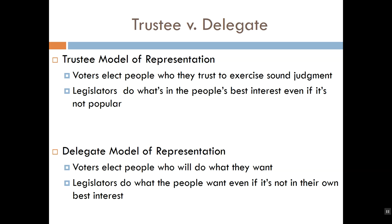What that means is that they are at least sometimes going to act like delegates rather than trustees. In the delegate model of representation, elected officials just give the people what they want. They trust that the people have a better understanding of what's in their own best interest than the politicians we send to Washington, and so they simply comply with those wishes. They don't get to exercise much discretion — they're essentially middlemen. We tell them to jump and they ask how high. Their own opinions, beliefs, or perspectives don't factor into the decision at all; they give us what we want regardless of what they think we need.